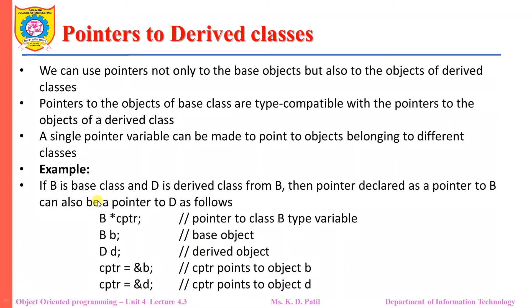Let us consider an example. If B is a base class and D is a derived class from base class B, then a pointer declared as a pointer to class B can also be a pointer to class D.